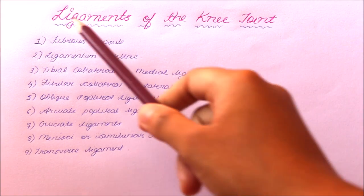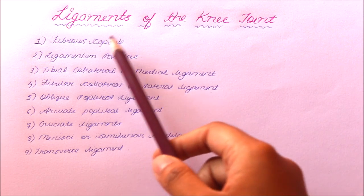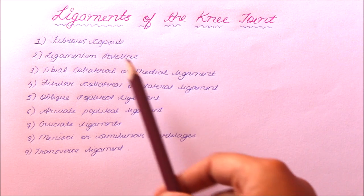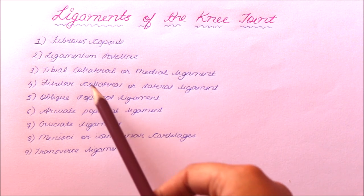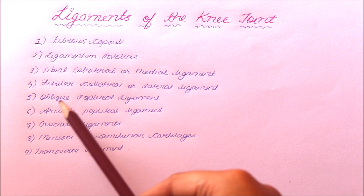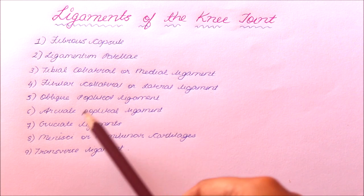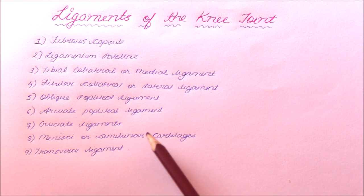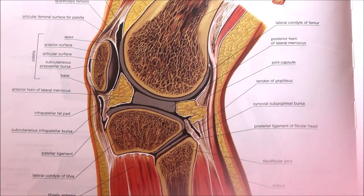There are nine ligaments of the knee joint: the fibrous capsule, the ligamentum patellae, the tibial collateral or medial collateral ligament, the fibular collateral or lateral ligament, the oblique popliteal ligament, the arcuate popliteal ligament, the cruciate ligaments, the menisci or semilunar cartilages, and the transverse ligament.